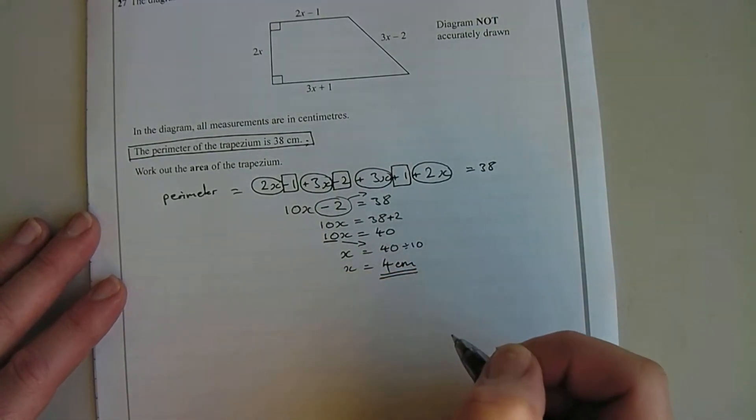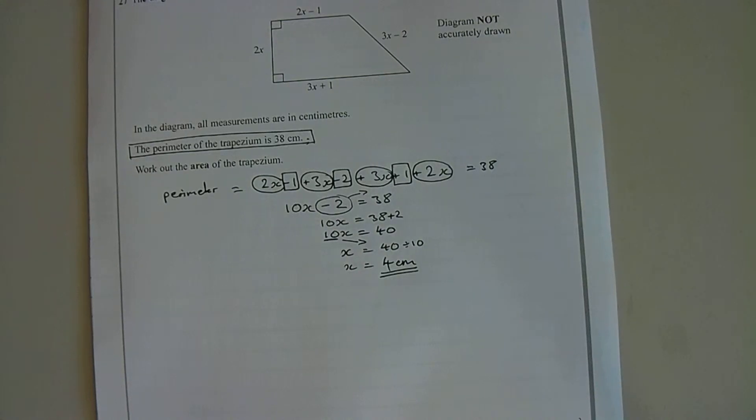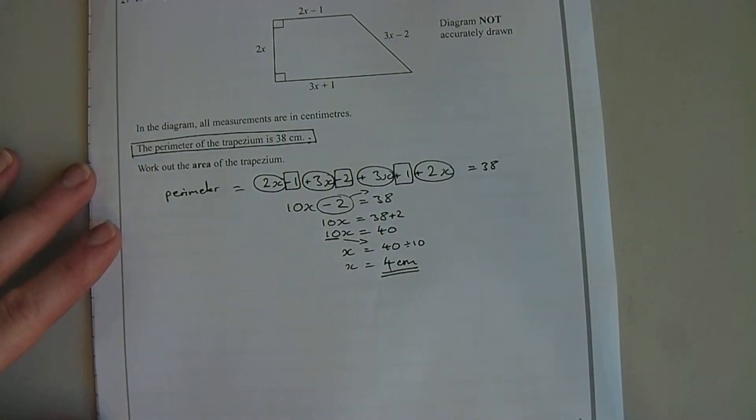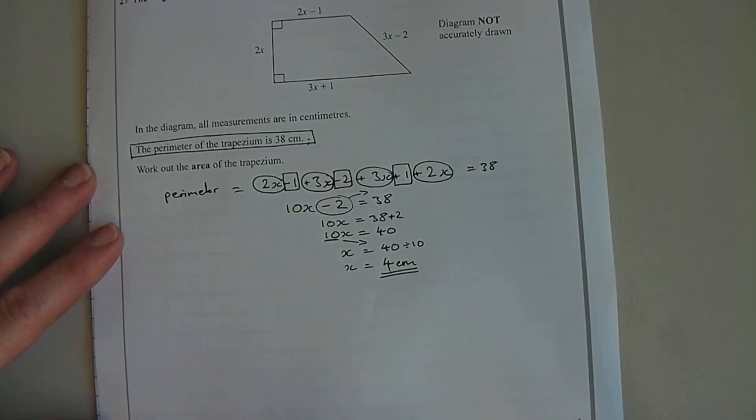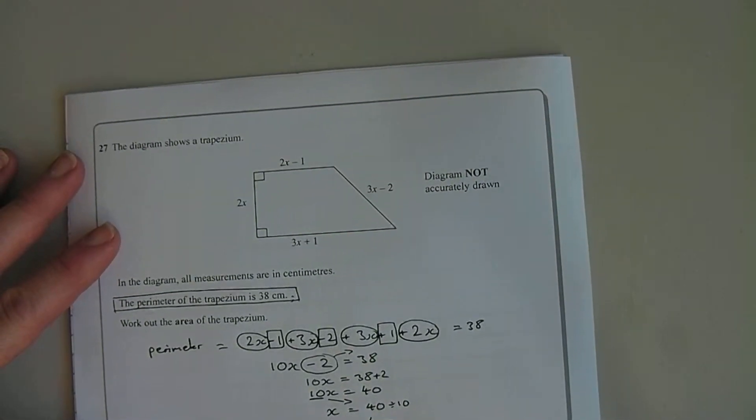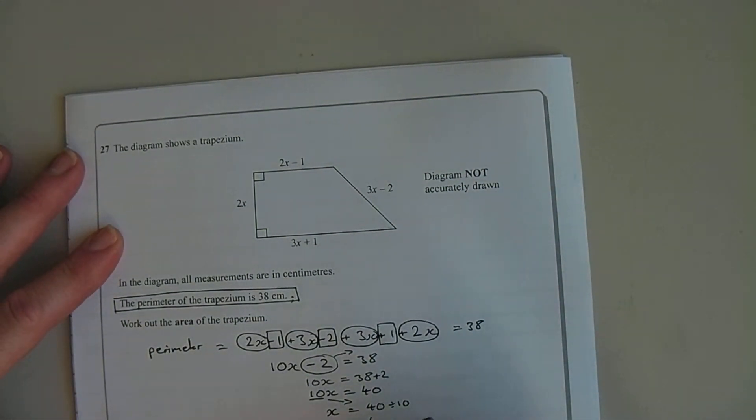So now we know that x is 4 centimeters, we can go back to our diagram. In actual fact I would use the diagram, I wouldn't draw it out again, so I'm going to use this 4 centimeters and put that back into my diagram.